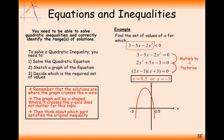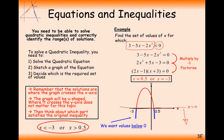Just like the previous example, we want this graph to be below the zero line. But unlike the other question, we have two distinct separate regions. Given those two separate regions, we need two separate inequalities. For the left-hand region, x is less than minus 3. Then write OR. For the right-hand region, x is greater than 0.5, giving us the bottom half of the curve.